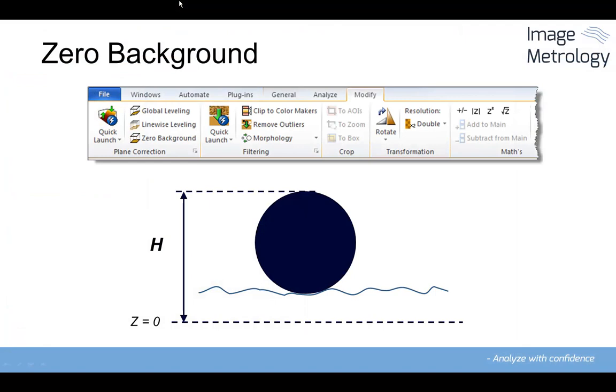The zero background method is used to set the background or substrate level to zero in an image. This is particularly useful in relation to particle analysis, where an accurate reference for height measurement is needed in order to measure the heights of particles or depths of pores correctly.